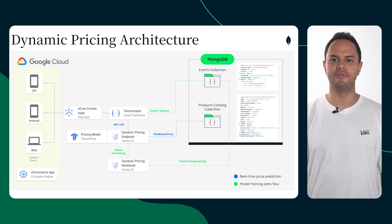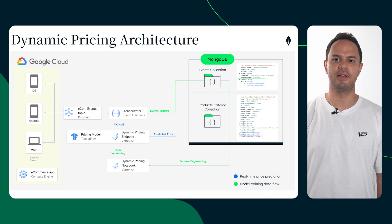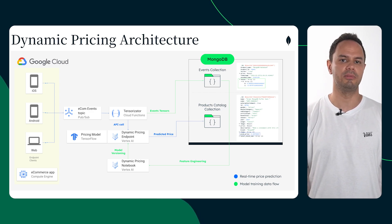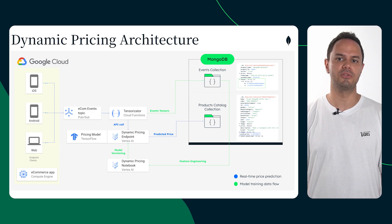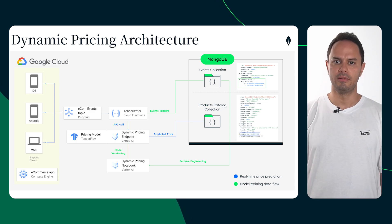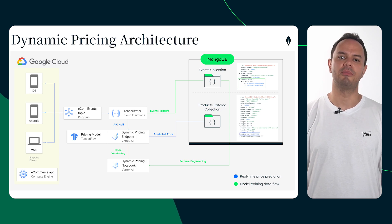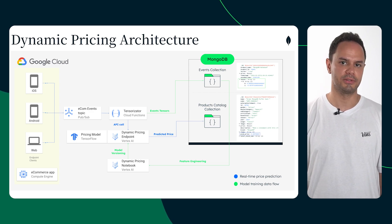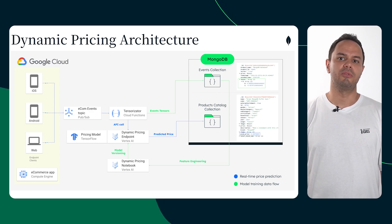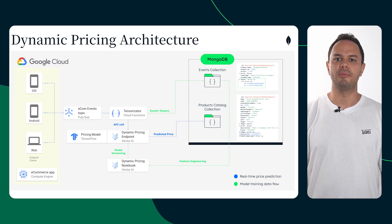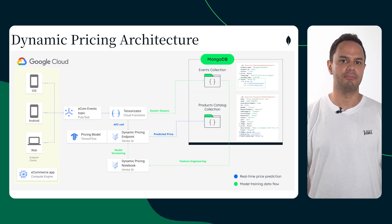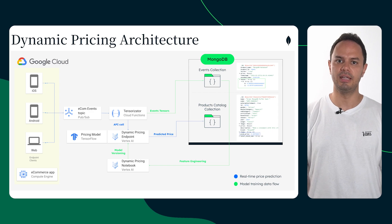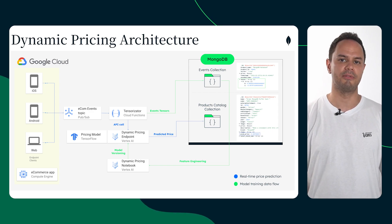Additionally, the same cloud function is pushing the tensorized customer behavior events into a new collection in MongoDB Atlas that will serve as our feature store for model fine-tuning and retraining purposes in the future. This architecture demonstrates MongoDB Atlas' ability to provide the scalable and efficient data management essential for retail operations. By seamlessly integrating with Vertex AI and Google Cloud PubSub, it enables real-time dynamic pricing based on customer behavior, leading to improved customer satisfaction and increased revenue.